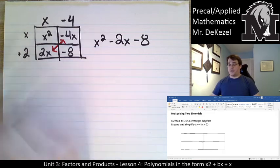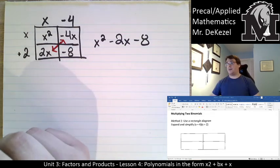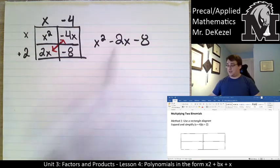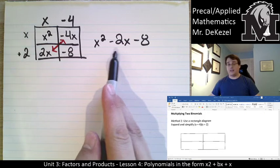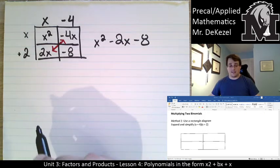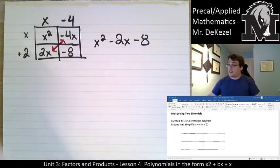So when we write it out, our answer is x squared minus 4x plus 2x is minus 2x and minus 8. So we multiplied those two binomials together, x minus 4 and x plus 2, to get x squared minus 2x minus 8.